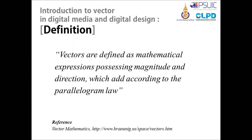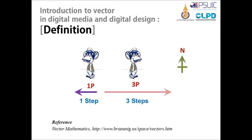Let's have a look at the definition of a vector. A vector is an object that has both a magnitude and a direction. Geometrically, we can picture a vector as a directed line segment whose length is the magnitude of the vector, with an arrow indicating the direction. The direction of the vector is from its tail to its head.